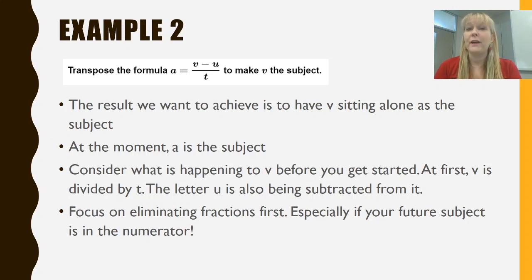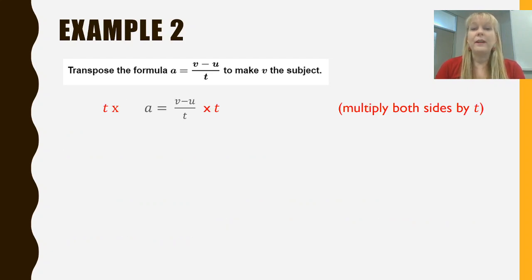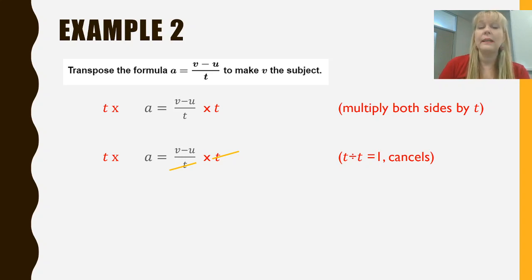So let's focus on eliminating fractions first. And this is probably a general rule when you are transposing is try and eliminate fractions when your subject is involved in one, especially if your subject's in the numerator. So to eliminate a fraction, we're going to multiply both sides by t, which is the denominator at the moment. That's going to make t disappear from the right hand side of the fraction because that's going to cancel out. And so we no longer will have a fraction and t will simply sit on the left hand side. It'll be at equals v take away u.